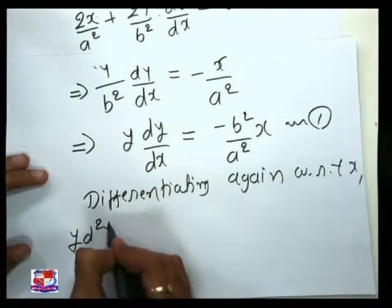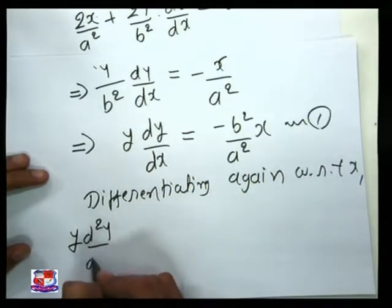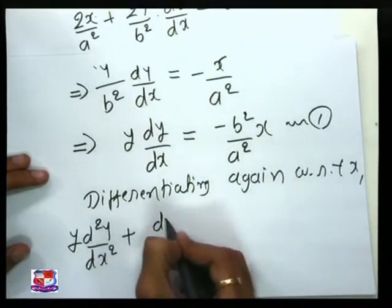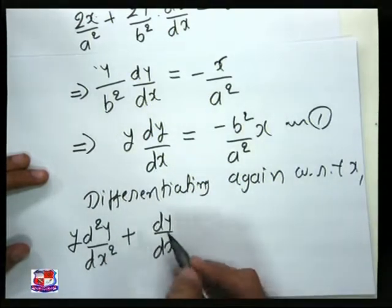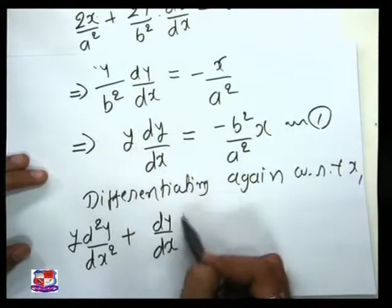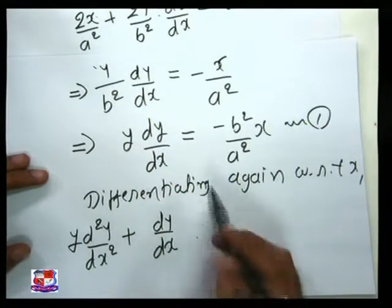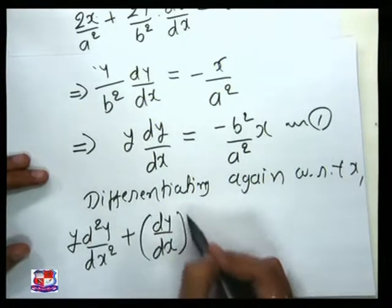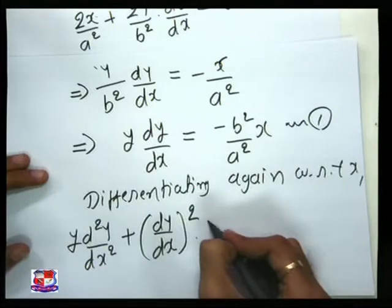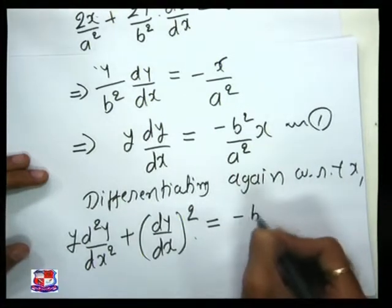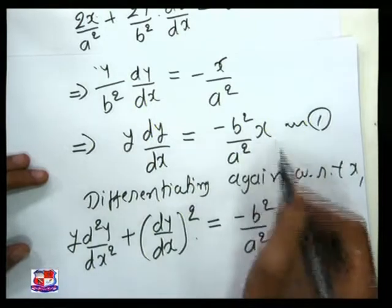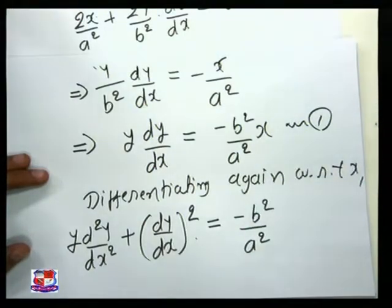I will get d²y/dx² plus, putting dy/dx as it is and differentiating y with respect to x, I will get again dy/dx, that is (dy/dx)² which is equal to minus b²/a², because differentiation of x is equal to 1.